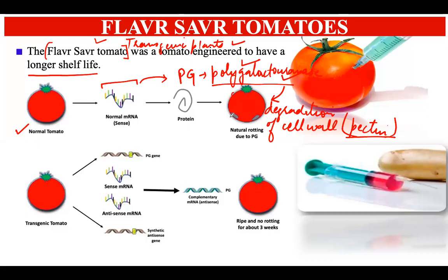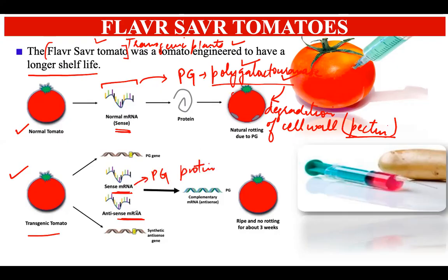When scientists wanted to develop tomatoes with a longer shelf life, they tried to introduce certain genes to achieve this outcome. In the transgenic tomato, they targeted the sense mRNA which was responsible for the production of the PG protein, and they produced an antisense mRNA which had a sequence complementary to this sense mRNA.